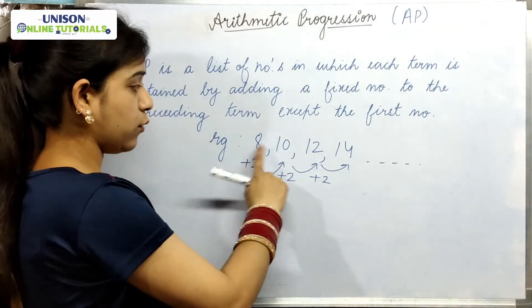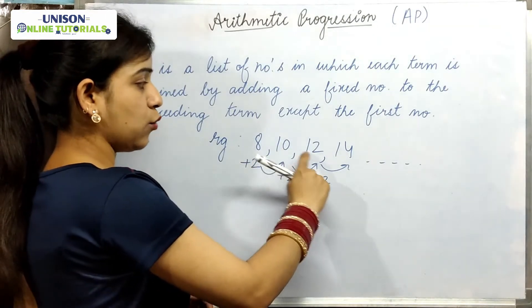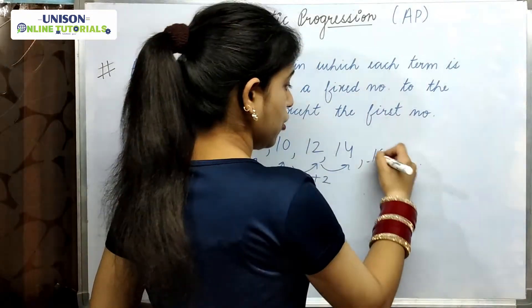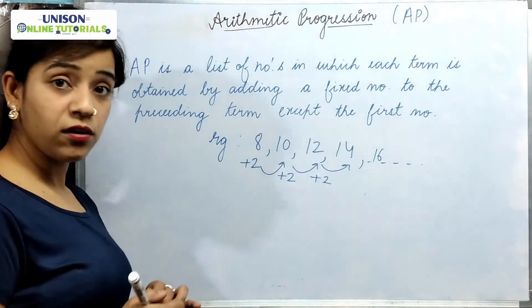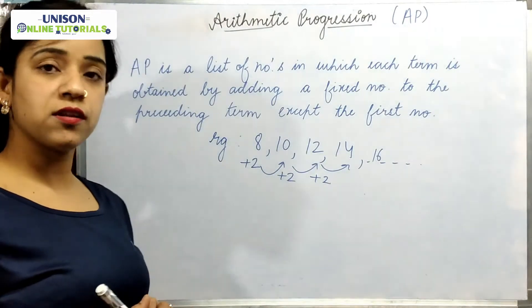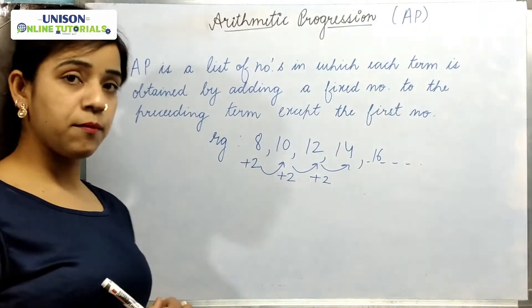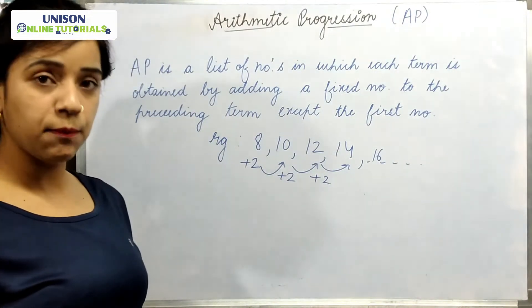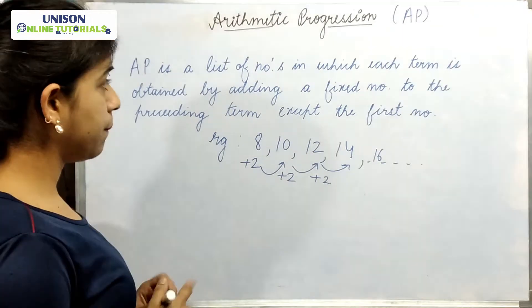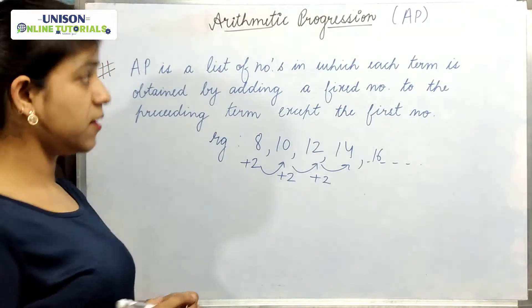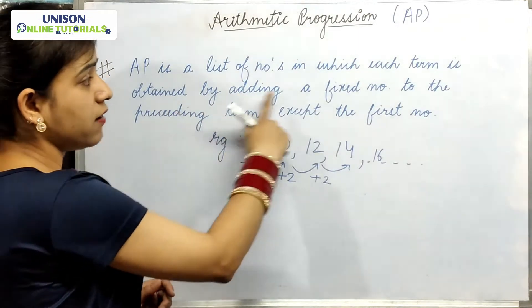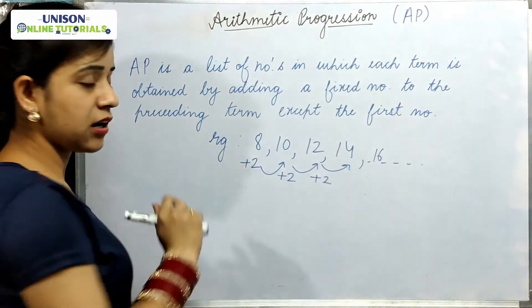If we add 2 to 8, we get 10. Similarly, 10, 12, 14, after that 16. So, we have a fixed pattern with a common difference of 2. This is a sequence of numbers that form an AP or Arithmetic Progression. AP is a list of numbers in which each term is obtained by adding a fixed number to the preceding term.